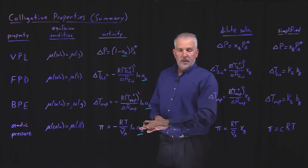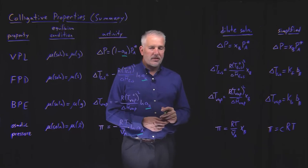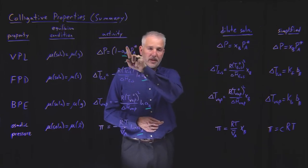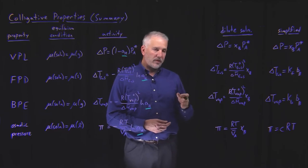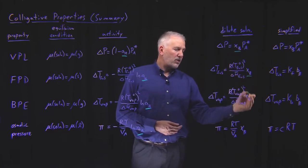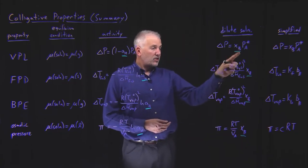It's not always convenient to use activity, so that's why we ended up deriving a different version of these expressions. In dilute solution, we can make assumptions about the activity of the solvent being related to the mole fraction of solvent and then solute. So these expressions all involve mole fraction, but notice that's mole fraction of solute, not mole fraction of solvent.